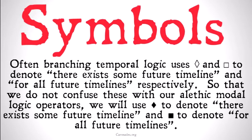Often branching temporal logic uses the diamond and the square that we've seen in alethic modal logic to denote 'there exists some future timeline' and 'for all future timelines' respectively. So that we don't confuse these with our alethic modal logic operators, here at carneades we're going to use a filled-in diamond to represent 'there exists some future timeline' and a filled-in square to denote 'for all future timelines.'